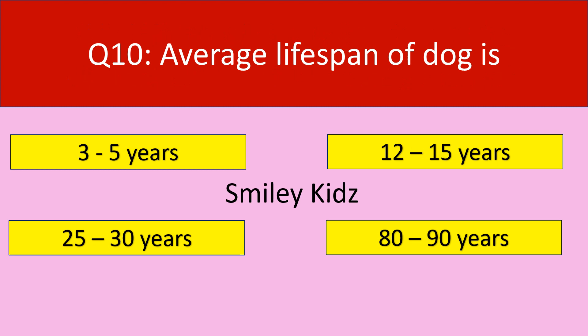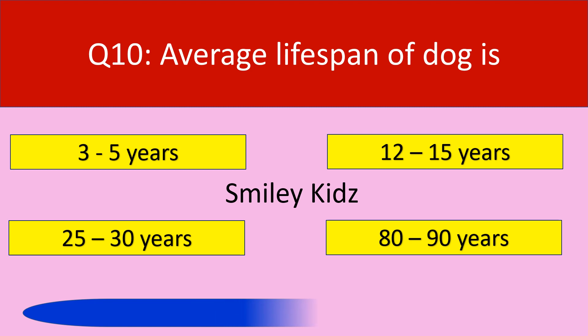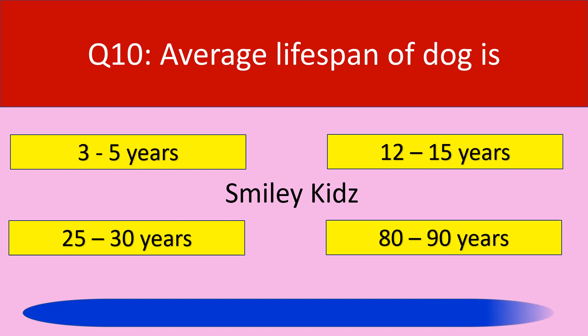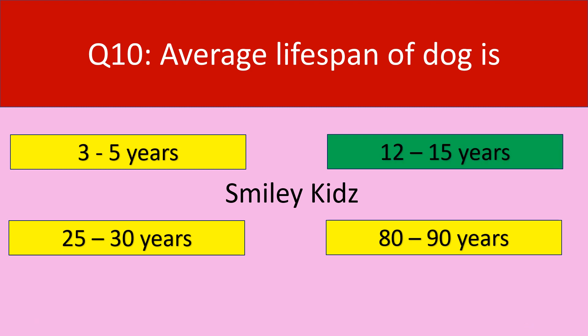Question number 10. Average lifespan of a dog is. Options are: 3 to 5 years, 12 to 15 years, 25 to 30 years, 80 to 90 years. Your time starts now. The correct answer is 12 to 15 years. Average lifespan of a dog is 12 to 15 years.